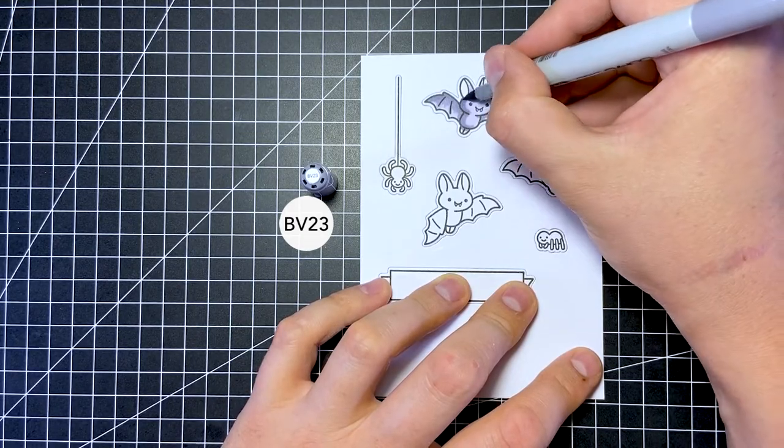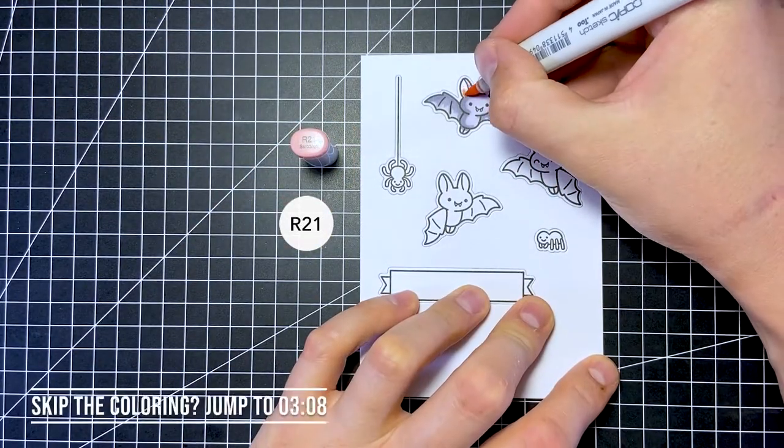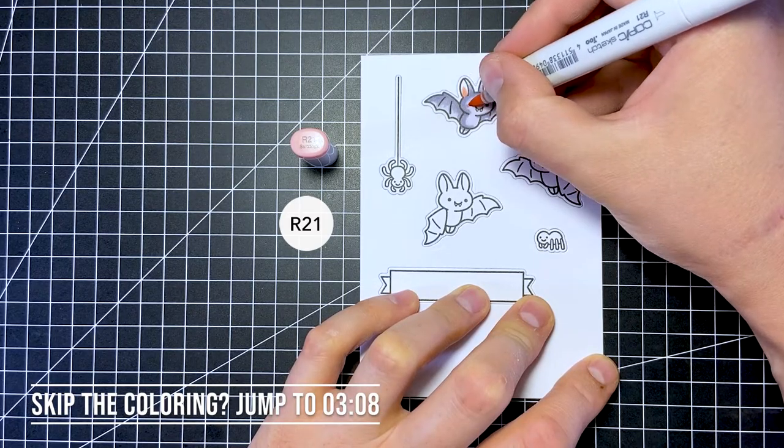If you want to skip watching me color, you can skip to the time that pops up on the screen now. You can also find a clickable time link in the description.